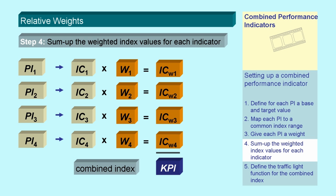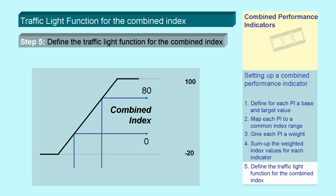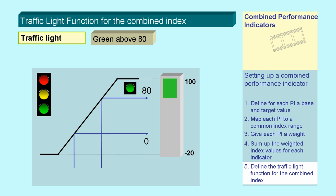Finally, summing up, we get the required combined index showing the overall key performance. The traffic light function is easily defined. As 80 is the target, all values equal or greater than 80 get a green light. Red for values below zero, as it means to miss the base value, and yellow in between.